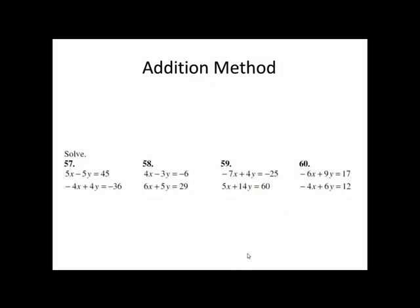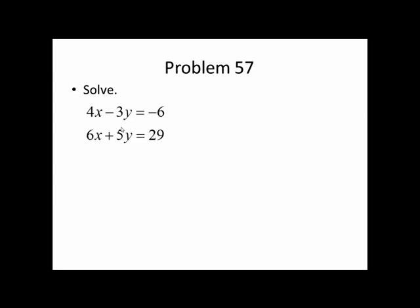Now we'll move on to the addition method. This method is pretty useful when you have both equations in standard form, where the x and y terms are both together on one side of the equation. Let's try problem 58. The first thing we check is, does the smaller x coefficient go into the larger x coefficient evenly? 4 doesn't go into 6 evenly. We check for y. 3 doesn't go into 5 evenly. So we're going to have to multiply both equations.